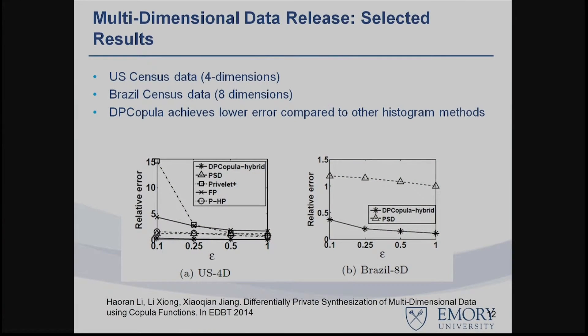If we learn both parts in a differentially private way and combine them, we can build a joint multidimensional data model and sample synthetic records from it. We tested this method on various publicly available datasets, including US census data, Brazilian census data, and others.